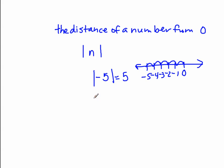So three, absolute value of three is, let's count how far three is away from zero. One, two, three. So it's three away.